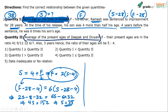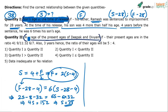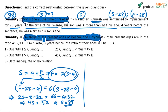Now let's do Quantity 2 calculation. Quantity 2 is the average of the present ages of Deepak and Divya. So we have to find the average of the present ages of Deepak and Divya.